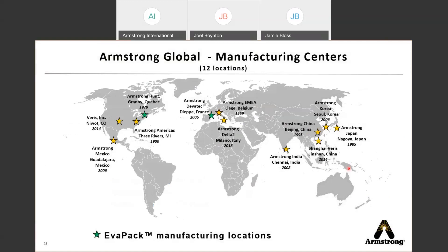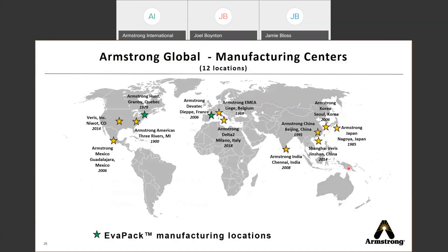EVAPAC is currently being manufactured in two of our 12 locations, depicted by green stars on the map. One is our Armstrong Hunt office in Granby, Quebec, and the other is our Devotec branch in Dieppe, France. This is not a limitation — we have the ability to move manufacturing to any of our other 10 locations very easily; we just haven't had the need to do so yet, but that option is available to all customers.